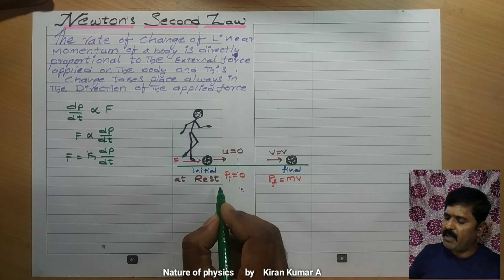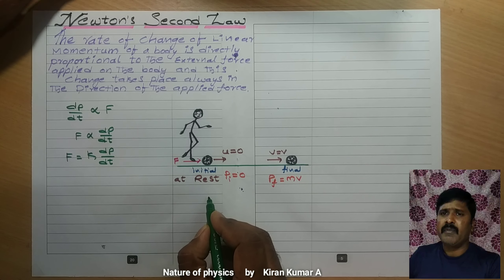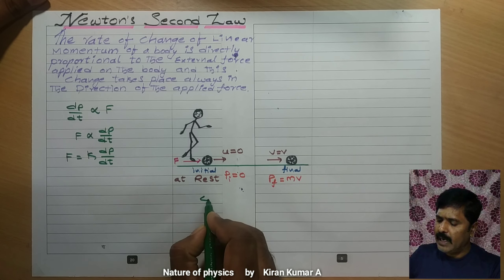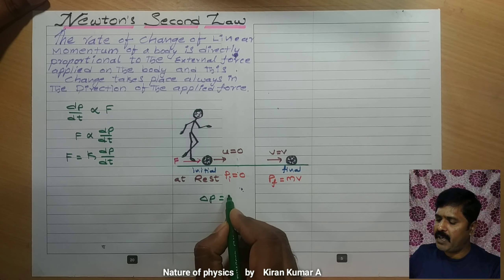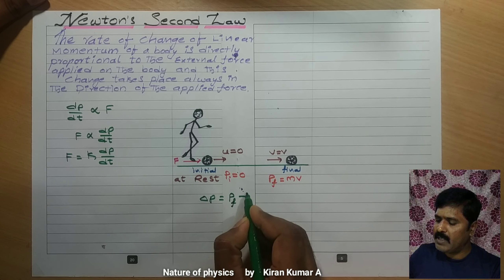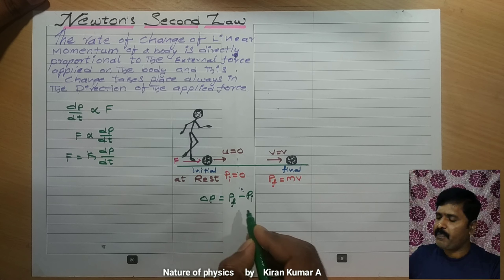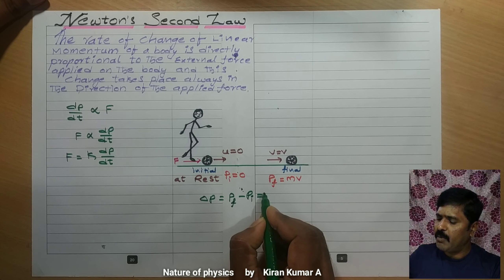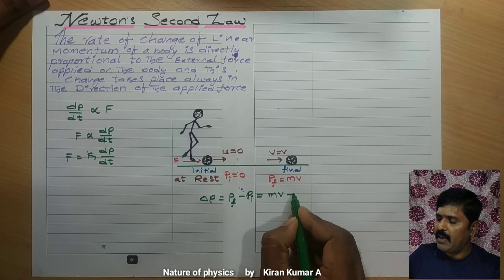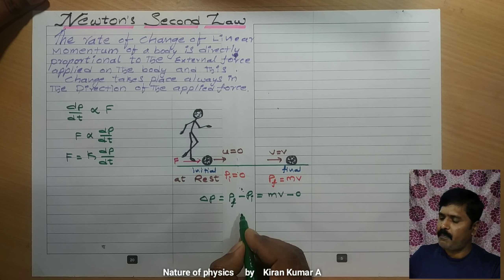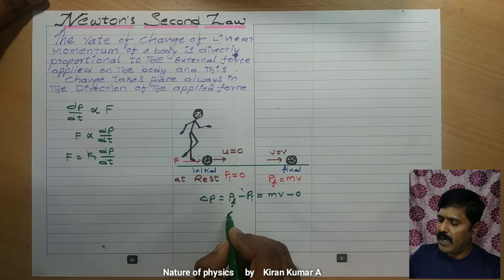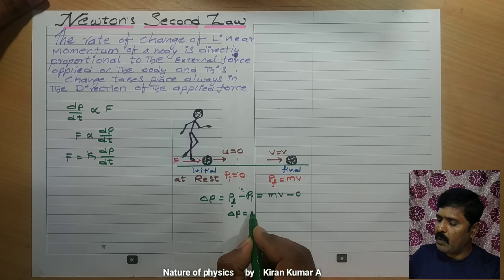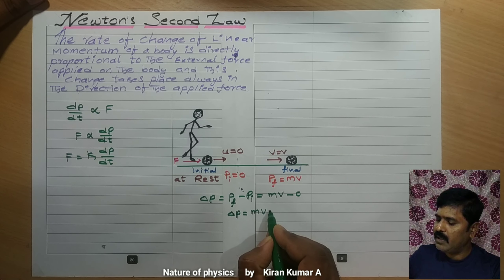Here the momentum is present. The change in momentum can be found from delta P, which is equal to final momentum minus initial momentum. So the change in momentum we are getting: final momentum is mV and initial momentum is 0. So delta P is equal to mV, which we can write as P.